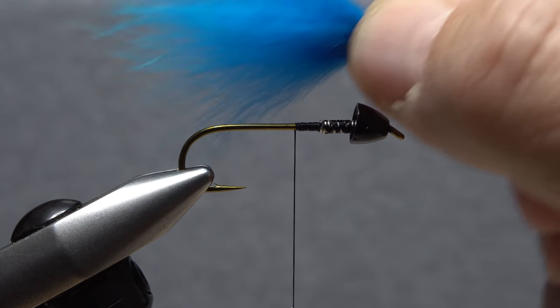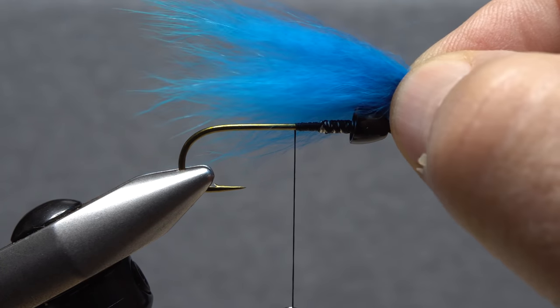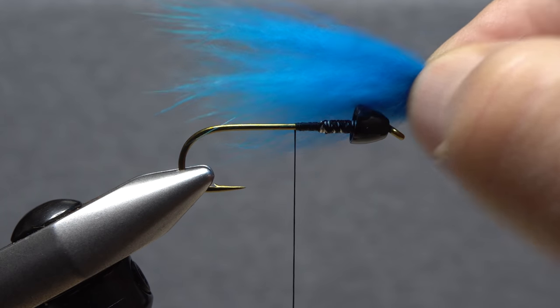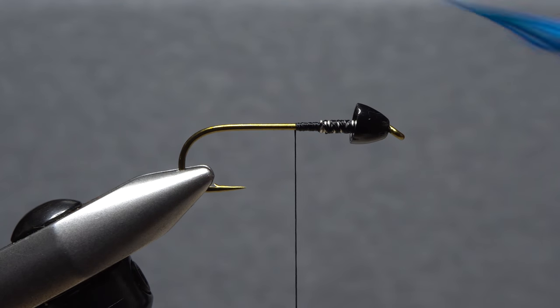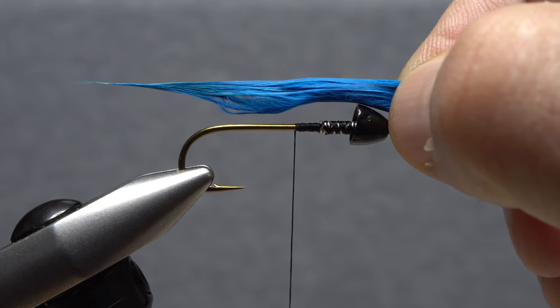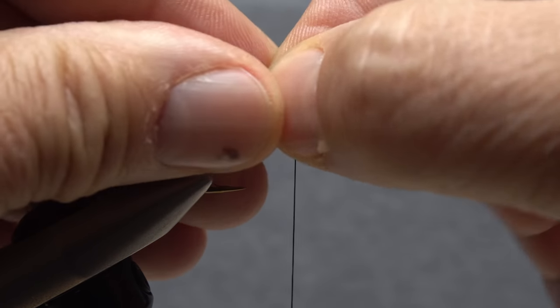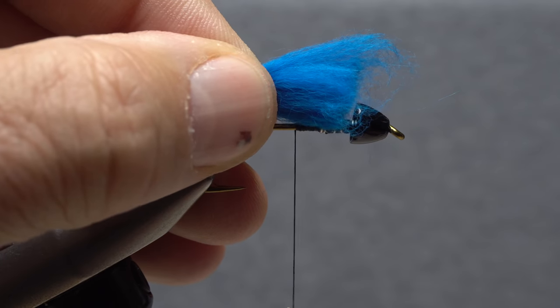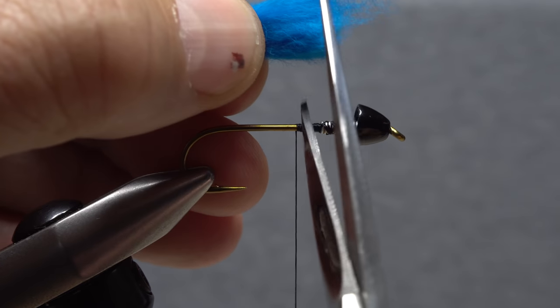With the clump pinched in the fingers of your right hand, measure to form a tail a little more than a full hook in length. Wetting the fur really helps to get it under control and makes tie-in much easier. Check your measurement again, then transfer it rearward to the start of the hook bend.